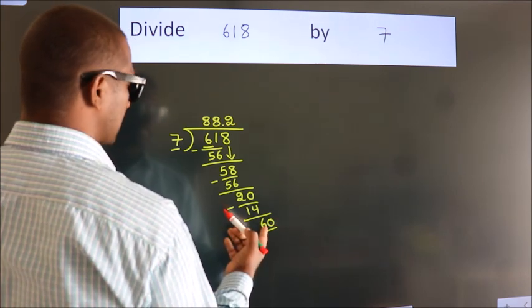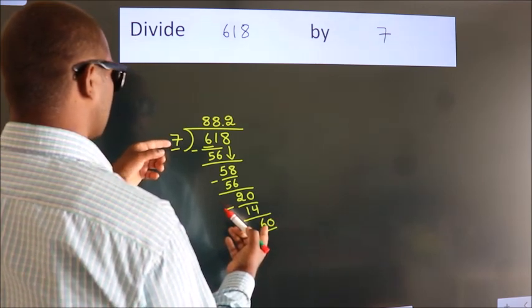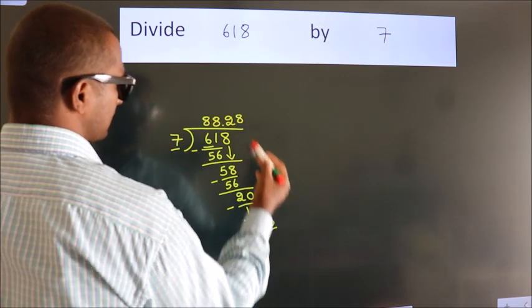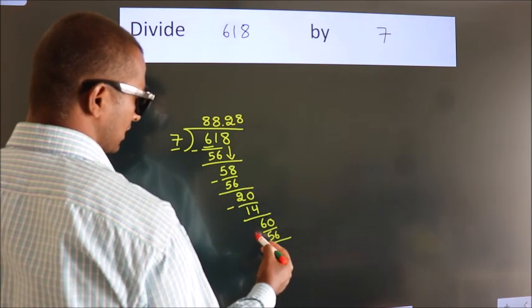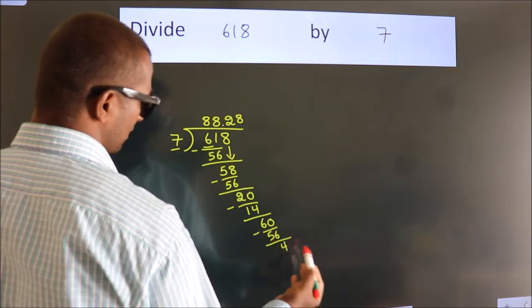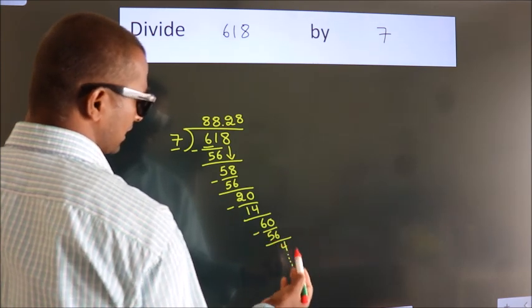A number close to 60 in 7 table is 7 times 8, 56. Now we subtract. We get 4. And the division continues.